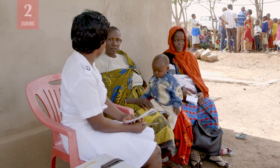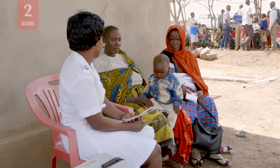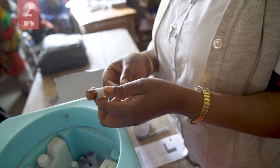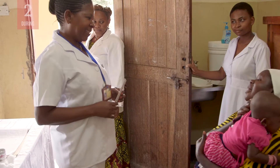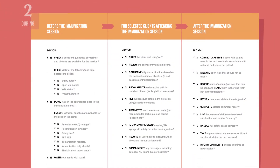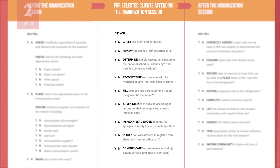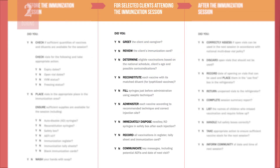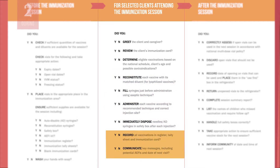The checklist can be a very helpful tool during a session. In fact, a copy of the checklist should always be posted on a wall in the immunization area for easy viewing throughout the session. The checklist is a useful tool for remembering key steps of the immunization process, beginning with greeting the caregiver and assessing an infant's eligibility for vaccination. It also walks through the steps of administering the vaccine, from reconstitution to disposing needles and syringes. And it lists critical steps after administration, like recording the vaccination and communicating key messages to caregivers.